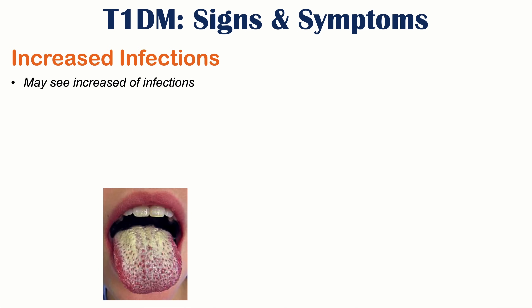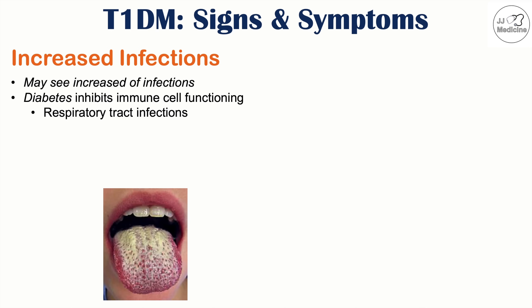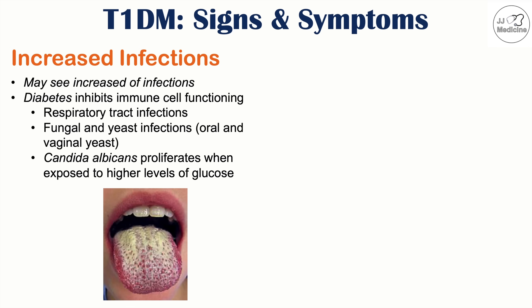Patients with type 1 diabetes can also experience increased risk of infections. Diabetes inhibits immune cell functioning, which can occur in both type 1 and type 2 diabetes. This includes increased respiratory tract infections, and more specifically, increased fungal and yeast infections — particularly oral and vaginal yeast infections. The yeast candida albicans proliferates when exposed to higher glucose levels, which explains the increased risk of yeast infections.